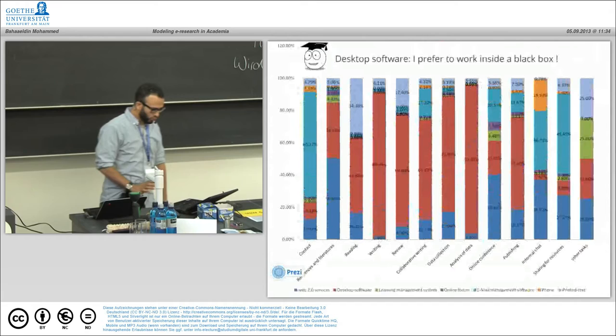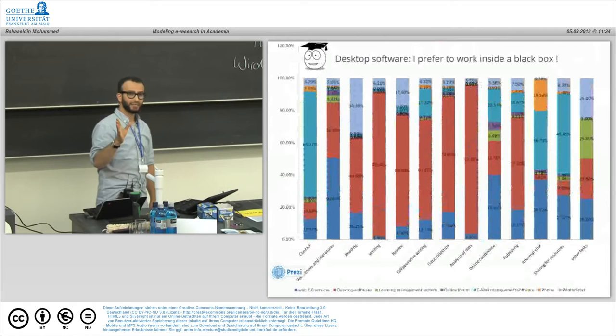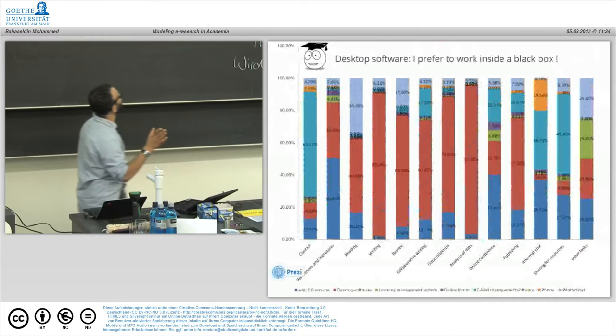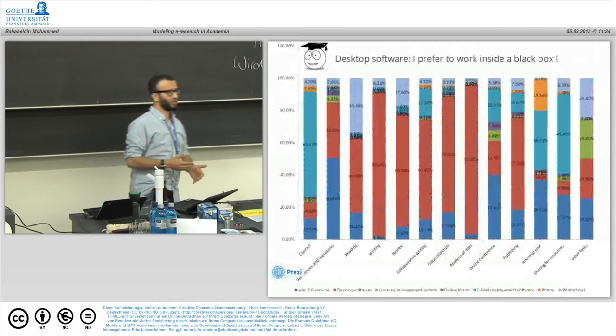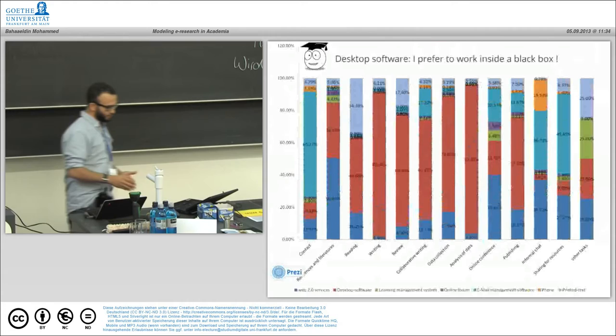About technology: which tools for which tasks? What was really interesting for us is that the red color is desktop software and the other is web 2.0 media. We found that PhD students right now prefer desktop software, a closed environment—a black box to work inside. They don't like to share, they don't like, or they don't have time to make it informal.